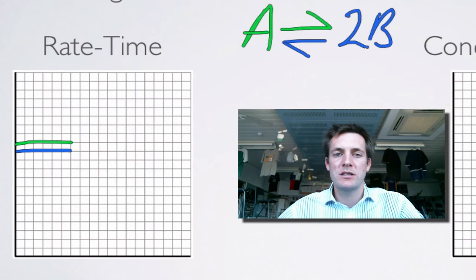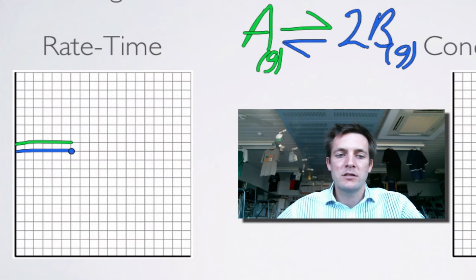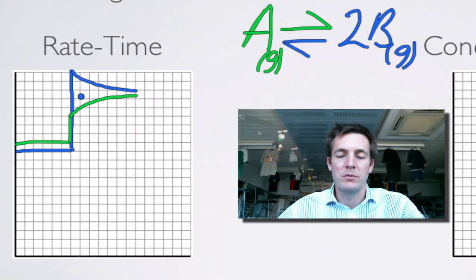Le Chatelier's principle says that this system is going to try and lower the pressure, because we've increased it. How does this system do that? It goes to the side with the fewest moles of gas. There's one mole of gas on the left and two moles of gas on the right, so this system is going to go to the left to decrease the pressure, and the backward reaction has to be favoured. So the backward reaction is going to increase in rate by more than the forward reaction. Then as usual they're going to come back together and meet at a level around about halfway between the two heights they reached, and when they equal each other the system is back at equilibrium.